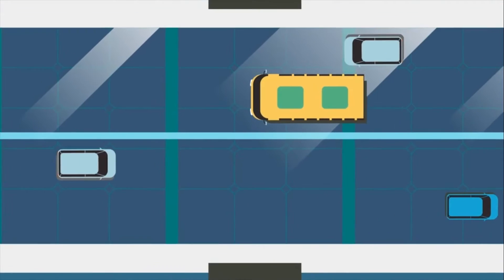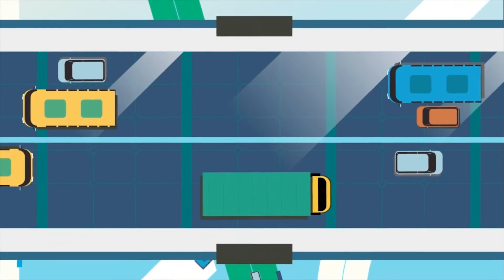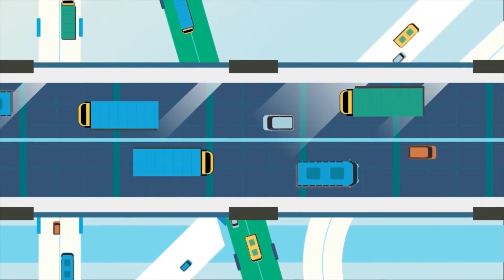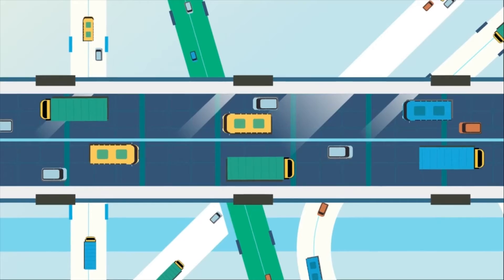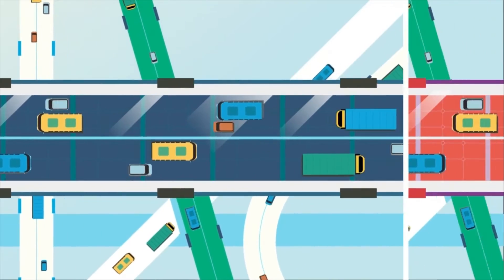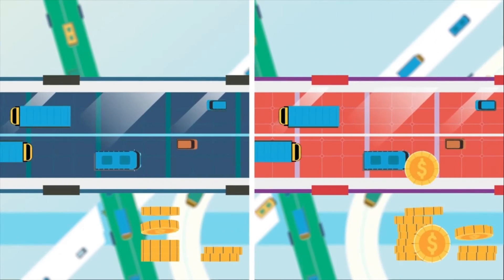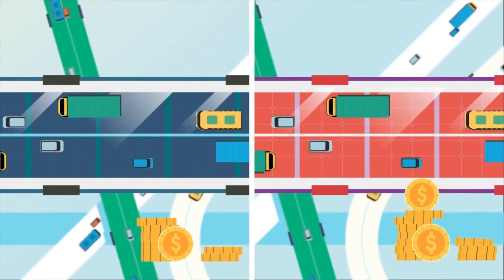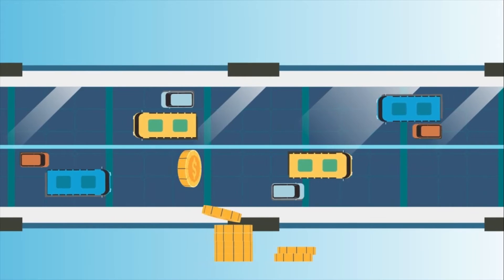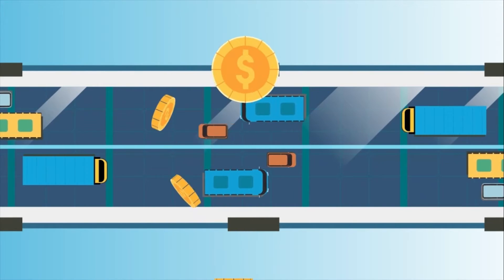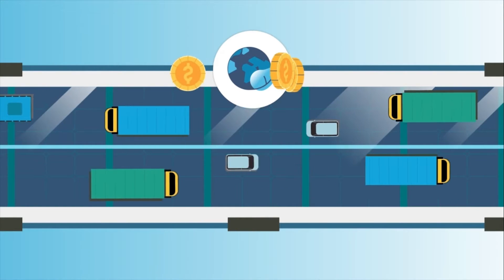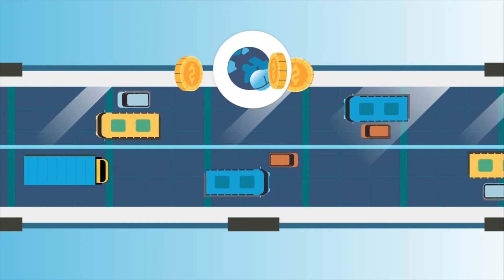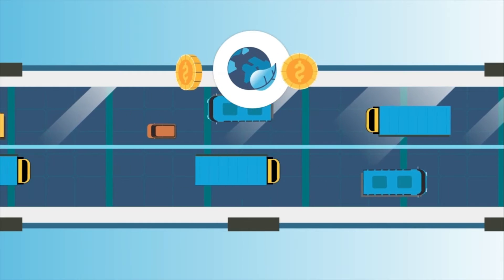For example, a road project that considers lifecycle costing may use more expensive but longer-lasting materials in the construction phase, which can save money over time by reducing maintenance costs. Lifecycle costing can also help ensure that infrastructure projects are sustainable by accounting for environmental impacts and long-term social and economic costs.